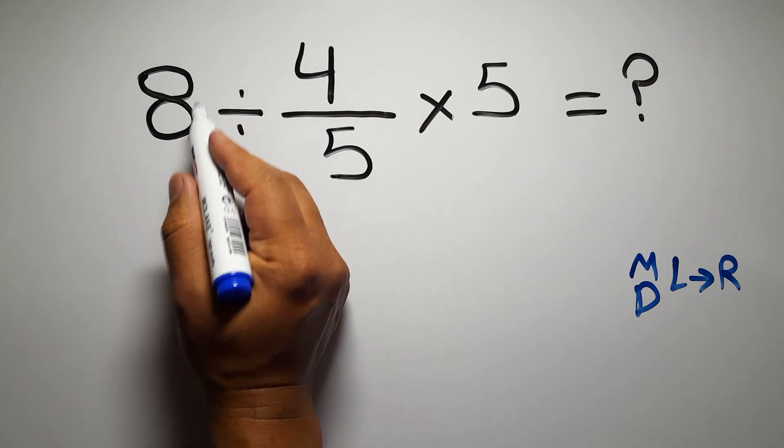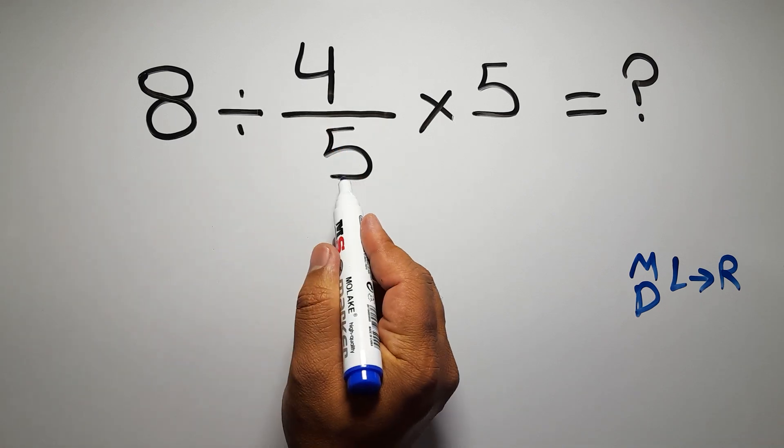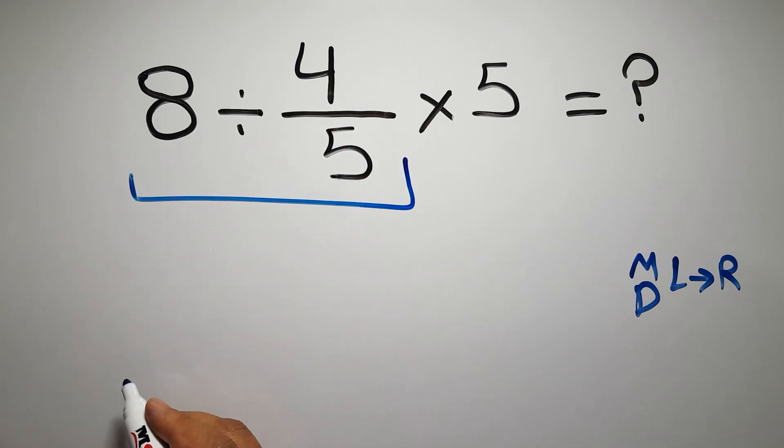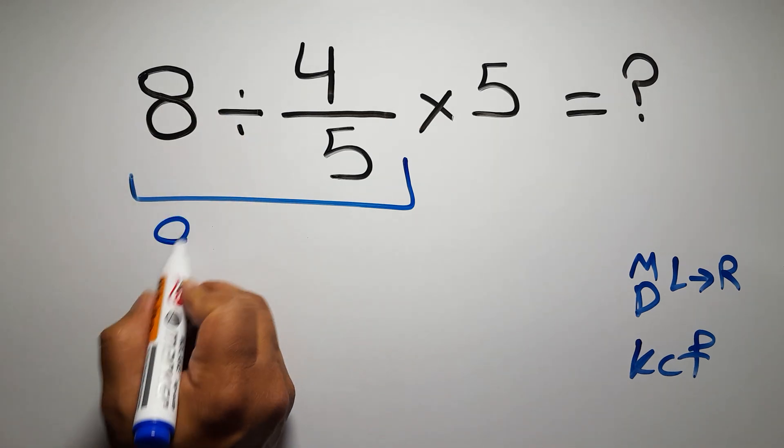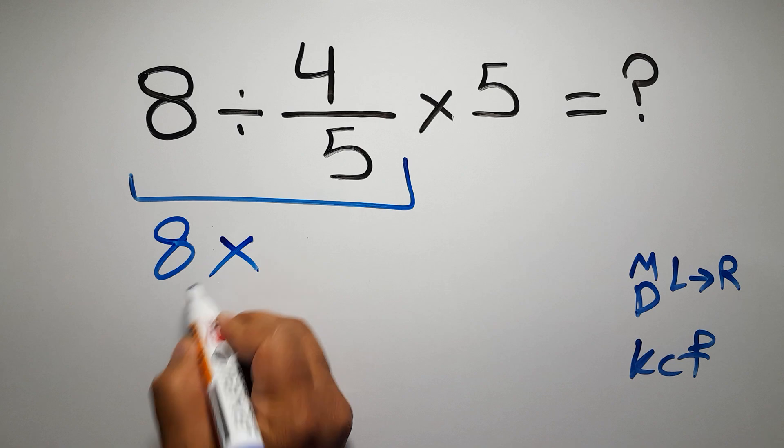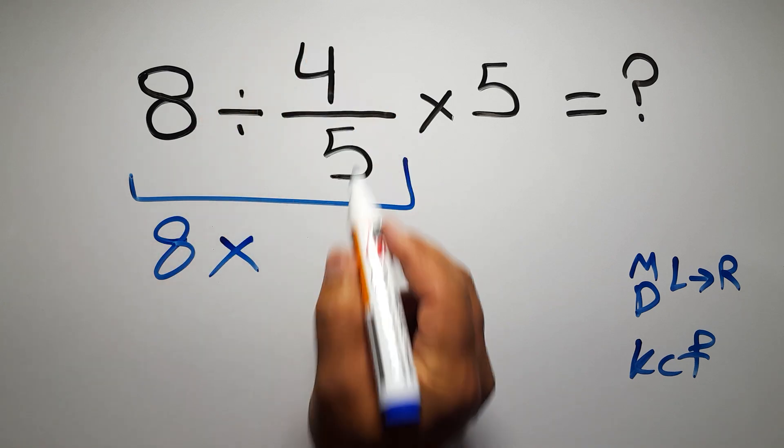So first this division: 8 divided by 4 over 5. According to the KCF rule, K stands for keep, C stands for change, and F stands for flip. We can write: keep the first fraction, change division to multiplication, and flip the second fraction.